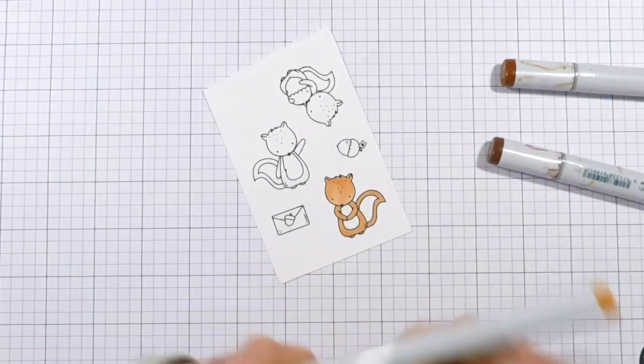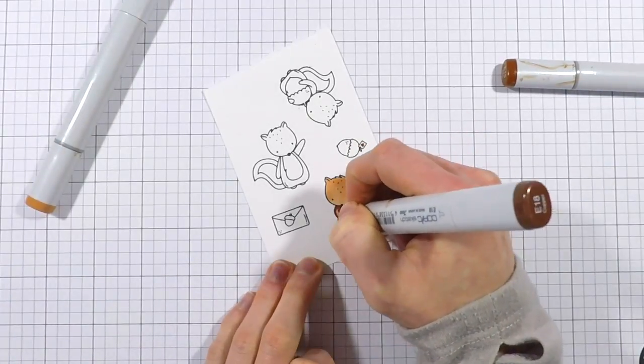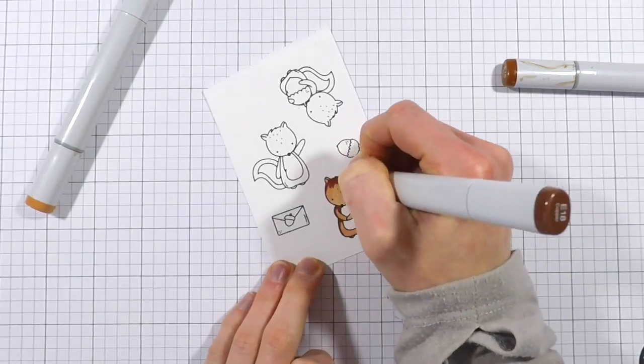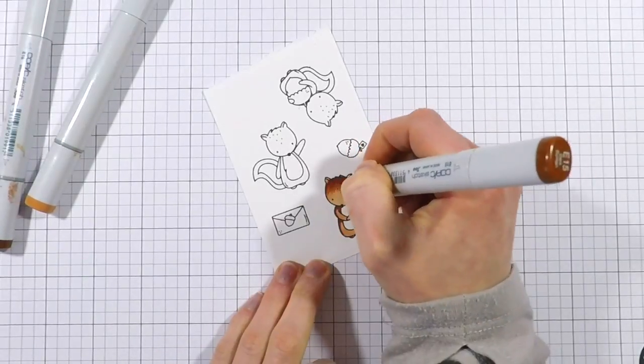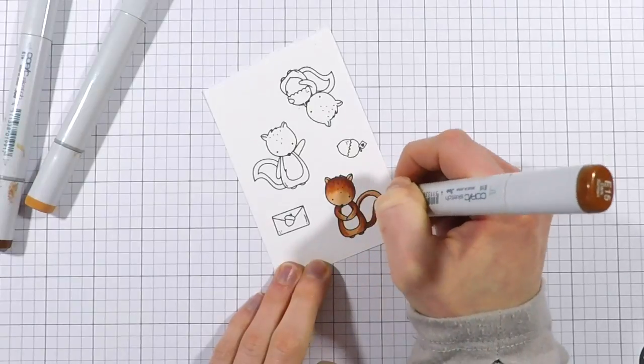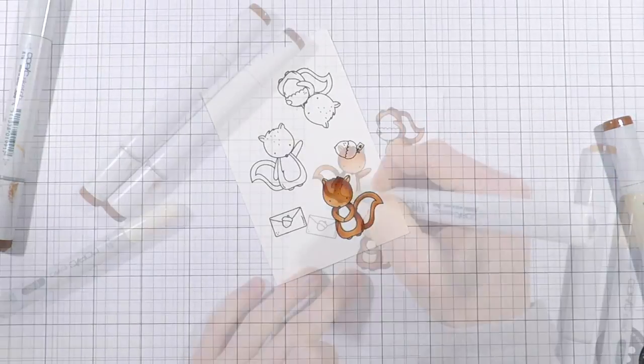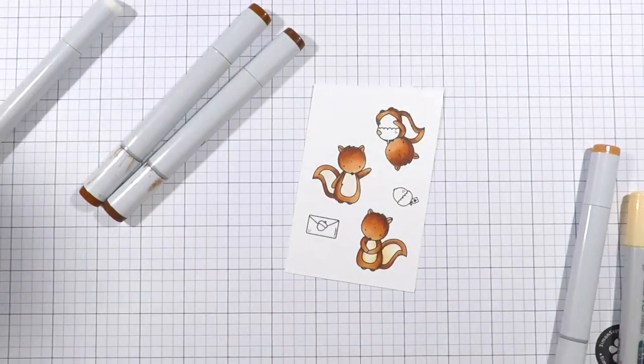I'm going to get started on my Copic coloring. For the Copic coloring I'm using browns for the squirrels. I'm going to show you coloring for only one of the squirrels and then the rest are colored exactly the same. I started off with my lightest color, then I'm blending in my darkest color and my mid-tone, and then blending it all out with my lightest tone.